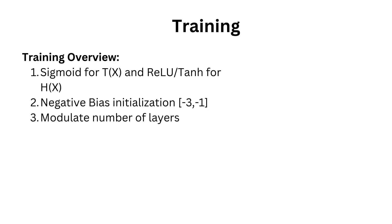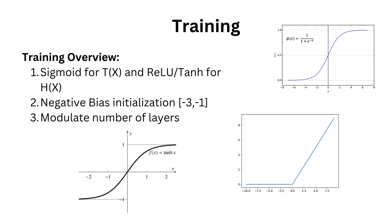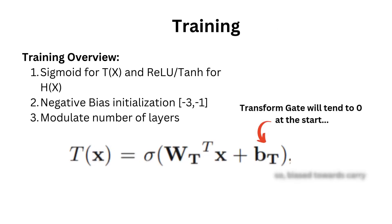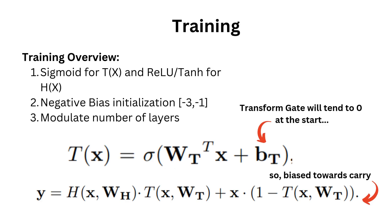The training procedure here is the same as one would use for training a plain network. The function t is using a sigmoid to bind itself between 0 and 1, while the rest of the network used relu or tanh. The bias was initialized between minus 3 or 1 to have a tendency to carry the input instead of transforming at the start. Finally, the number of layers was modulated throughout the experiment to quantify the performance of the architecture.